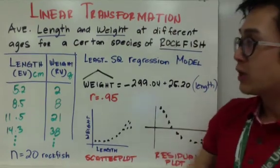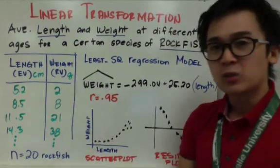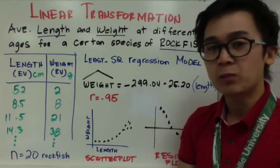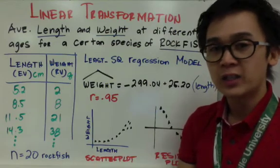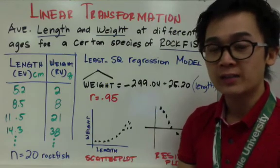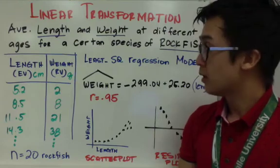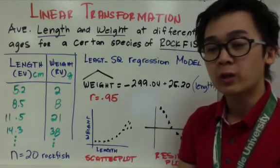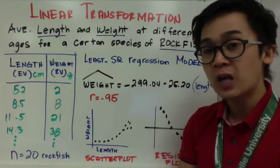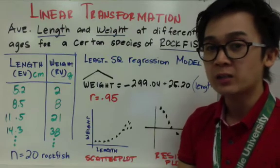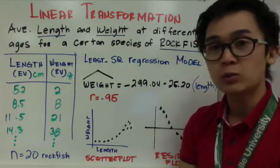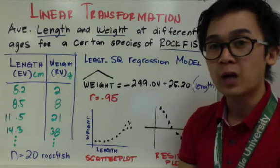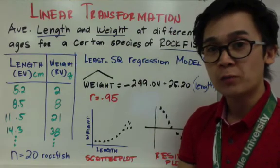Now, are we going to disregard our dataset? We collected 20 fish — are we just going to throw it away because our scatter plot is non-linear and our residual plot has a pattern? In statistics we have a way to change a non-linear scatter plot to a linear one, and that's what we're going to do: achieve linearity by transforming one of the variables.